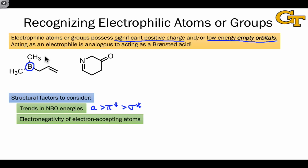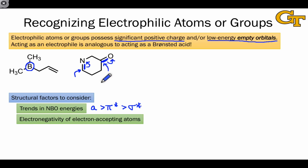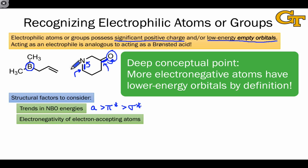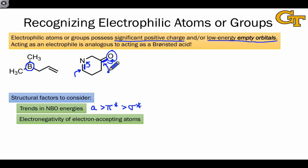The electronegativity of electron-accepting atoms is also important. For example, we might identify the pi-antibonds of carbon-nitrogen and carbon-oxygen double bonds as the most important electron-accepting groups within a molecule, and start thinking about which electron flow pathway is more favorable. If we consider electronegativity and recognize that oxygen is more electronegative than nitrogen, we can conclude that the oxygen is likely to be the most electrophilic atom within the molecule, suggesting that electron flow adding to the carbon of the C=O double bond is going to be more favorable than adding to the carbon of the C=N double bond.